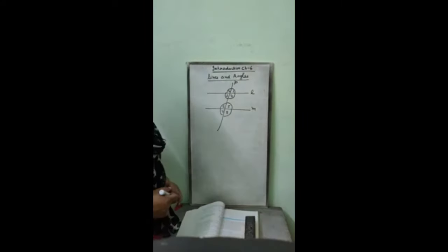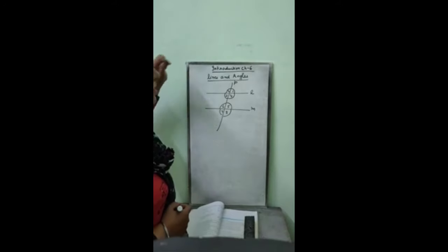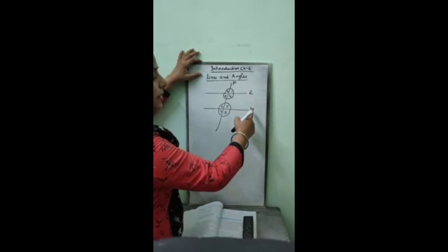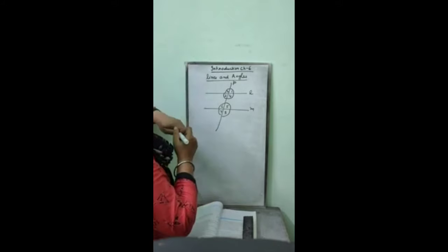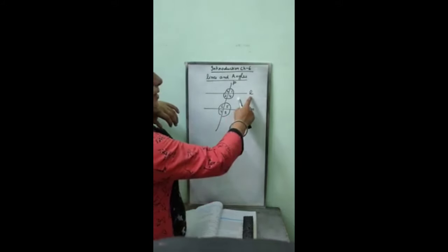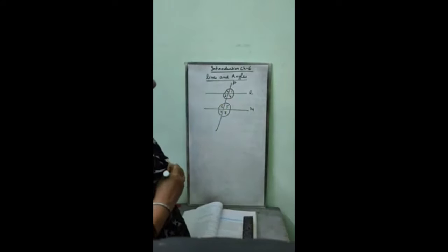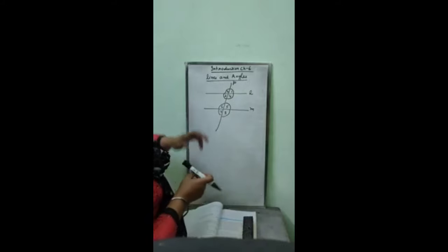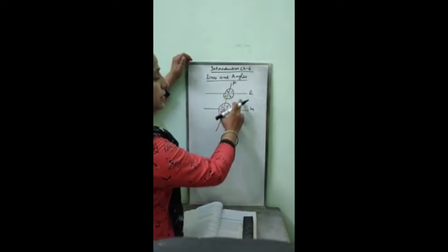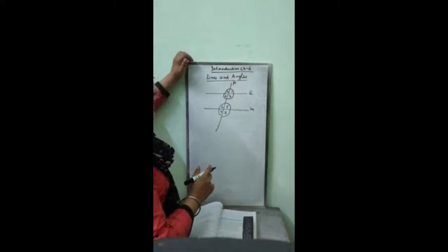Students, I am going to give you the introduction of Chapter 6, Lines and Angles. This chapter is based upon parallel lines and transversal. L and M are two parallel lines. They are intersected by a transversal small p. When the lines are denoted by a small alphabet, only one alphabet is sufficient to name them. When transversal is intersecting these two lines, it is making 8 angles here: 1, 2, 3, 4, 5, 6, 7, 8.